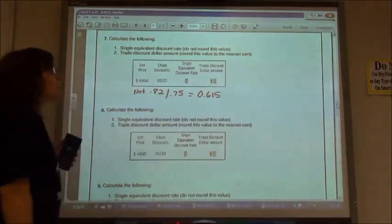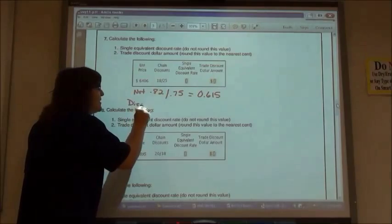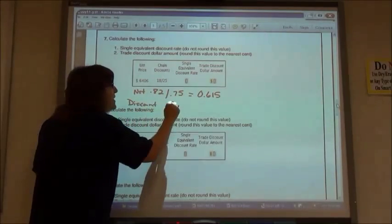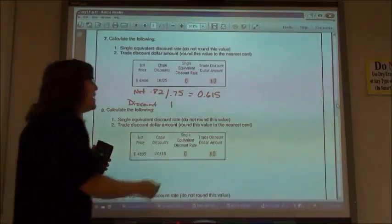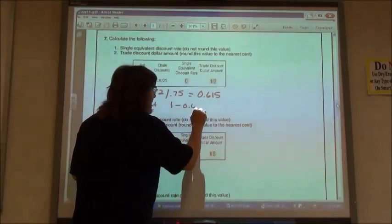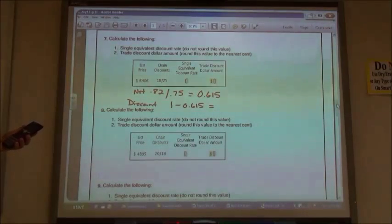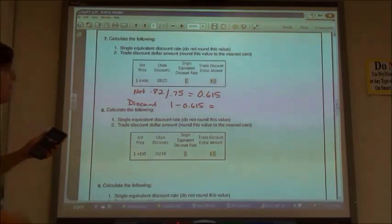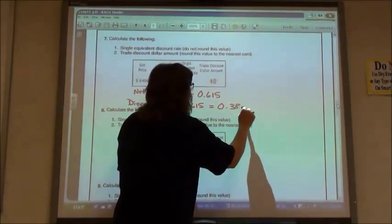That's my net price equivalent. To find what that is as a discount, as a single discount, I'm going to take 1, 1 is for 100%, the full price, and I'm going to subtract what the net is. So if I take 1 minus 0.615, my discount equivalent rate is 0.385.